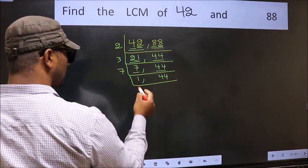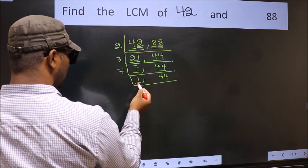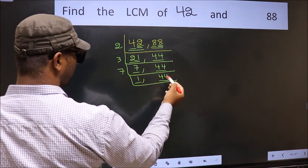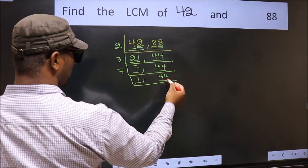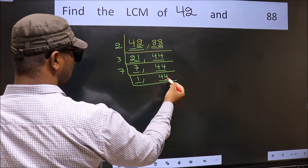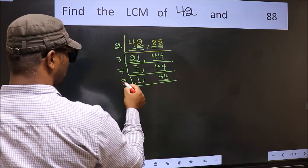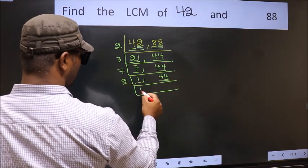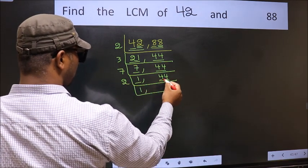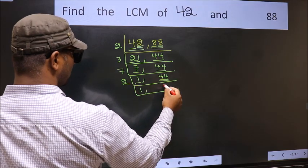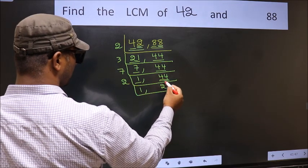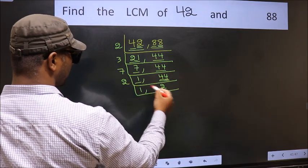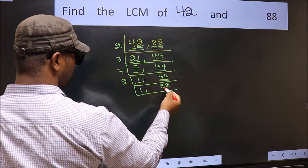Now we got 1 here, so focus on the next number 44. The last digit is 4, so take 2. The first number is 4 — when do we get 4 in the 2 times table? 2 twos are 4. The other number is 4 — when do we get 4 in the 2 times table? 2 twos are 4.